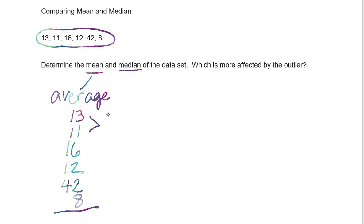So I'm gonna add: 13 and 11 is 24, 16 and 12 is 28, 42 and 8 is 50, 24 and 28 is 52, and 52 plus 50 is 102. So first I'm gonna find the sum. The sum is 102.